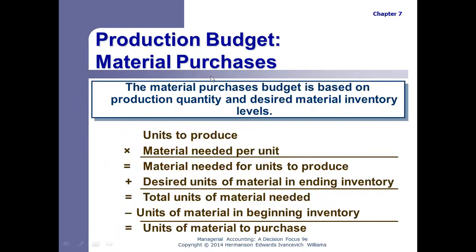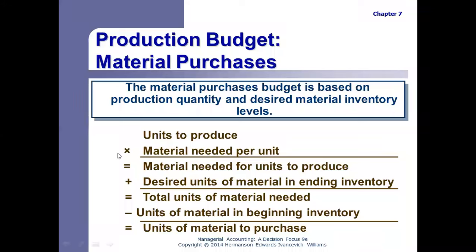Now that we have a production budget and know how many units we're going to make, we have to figure out how much materials to buy. The basic formula is: units to be produced times the materials needed per unit equals total materials needed. But just like finished goods inventory, we want some extra materials on hand just in case — that's the desired units of material in ending inventory.